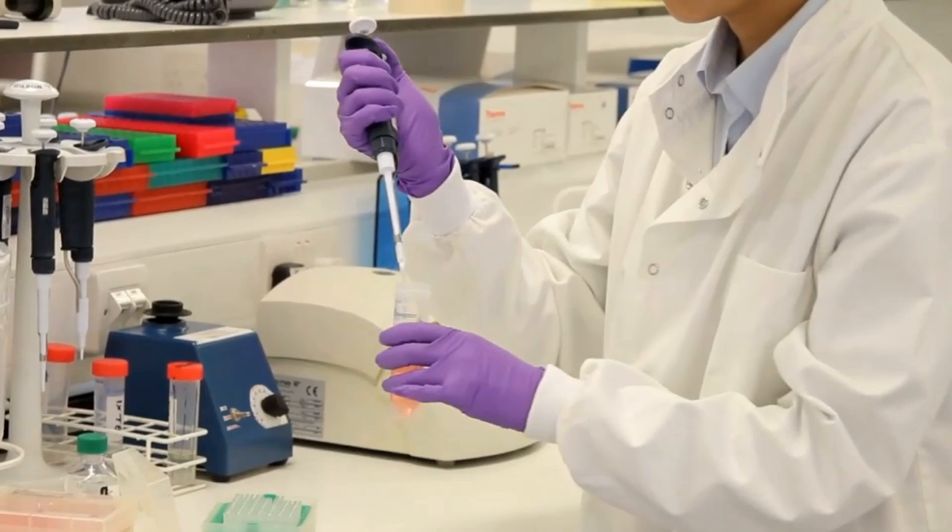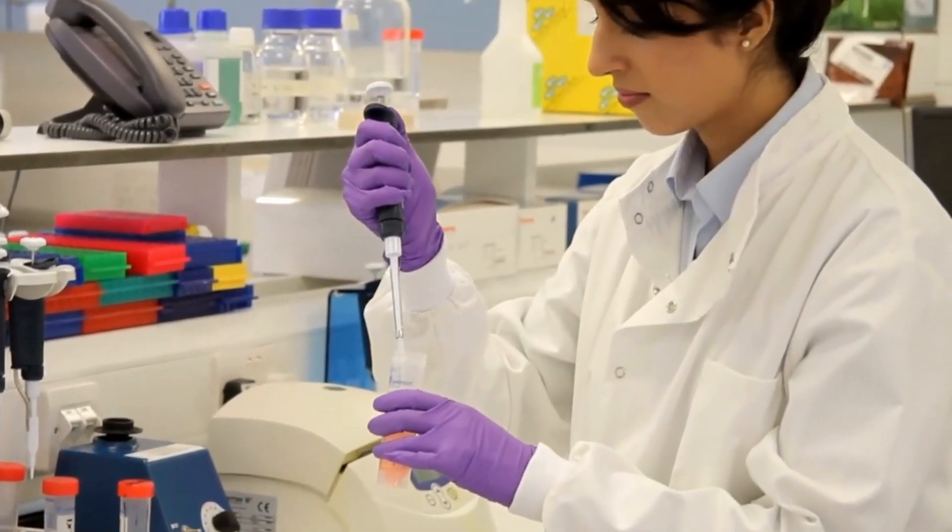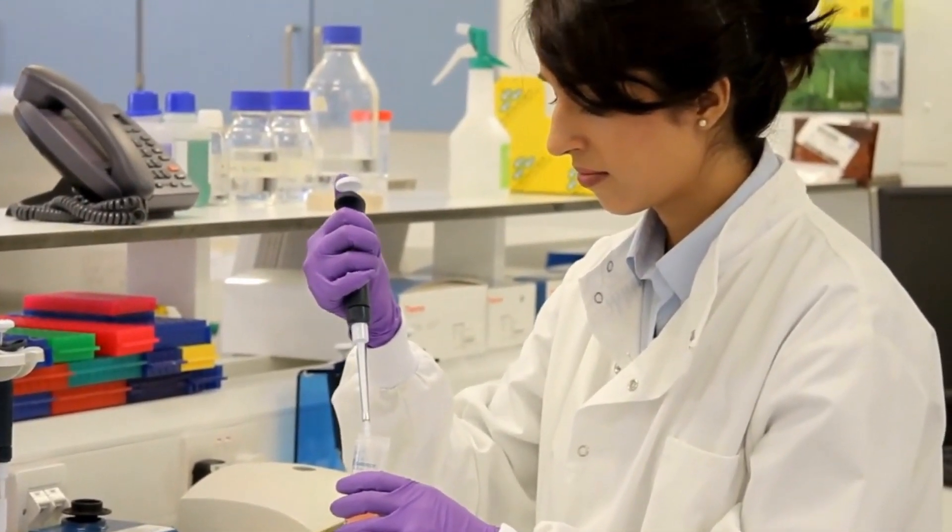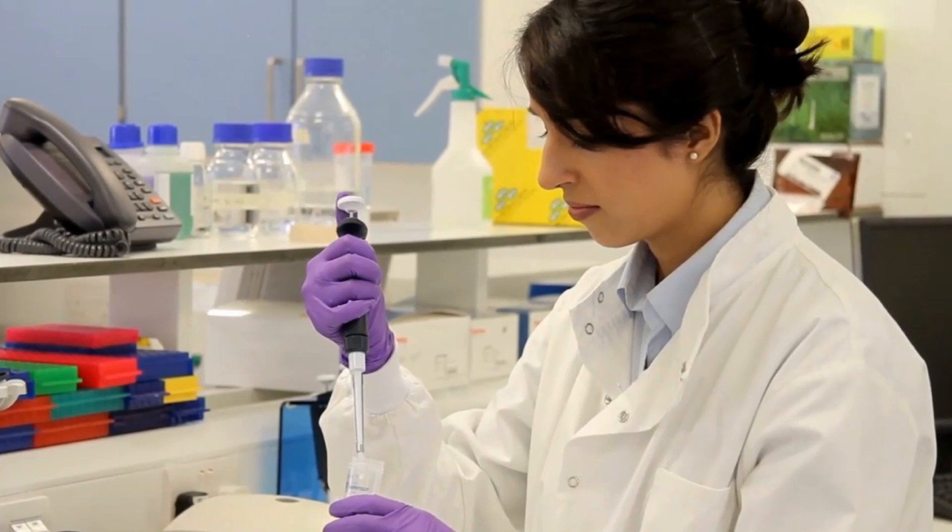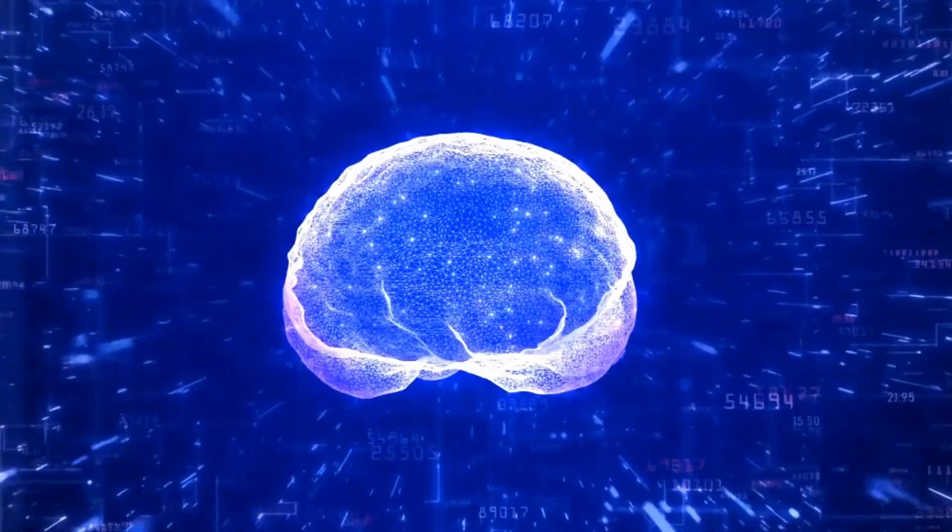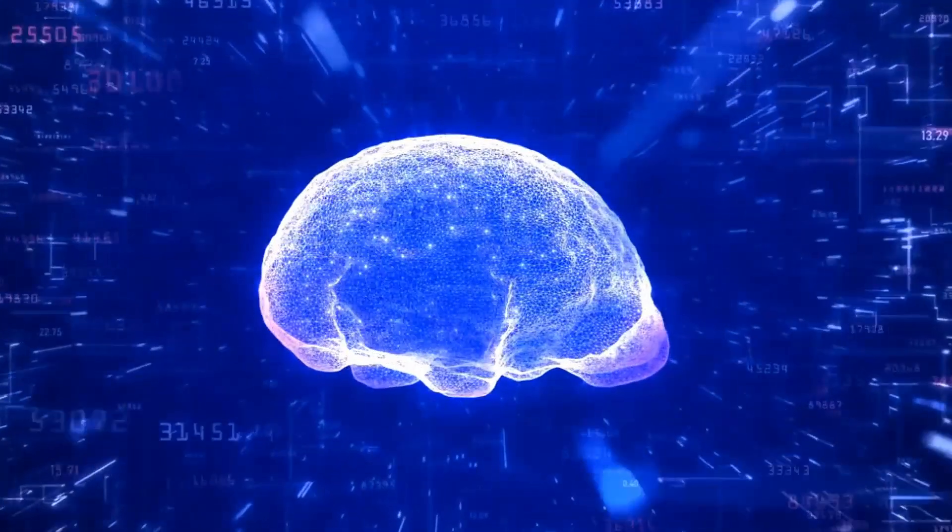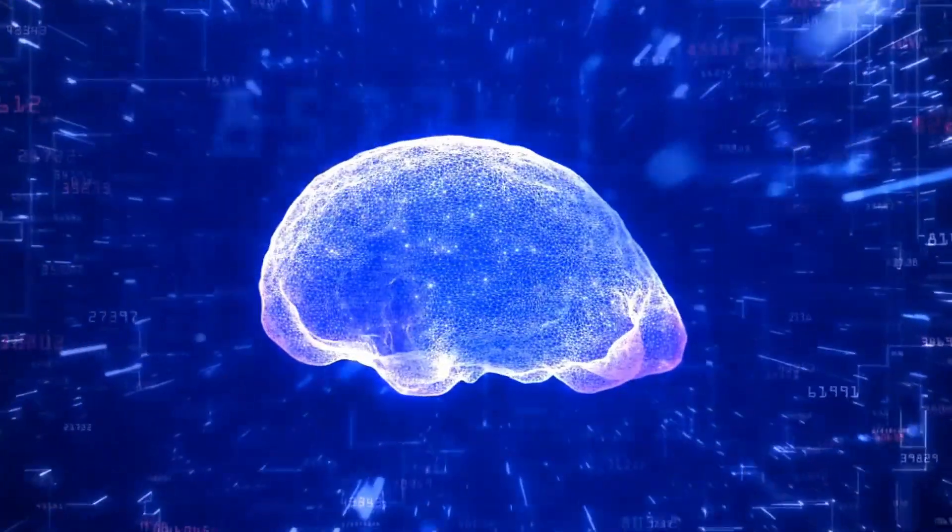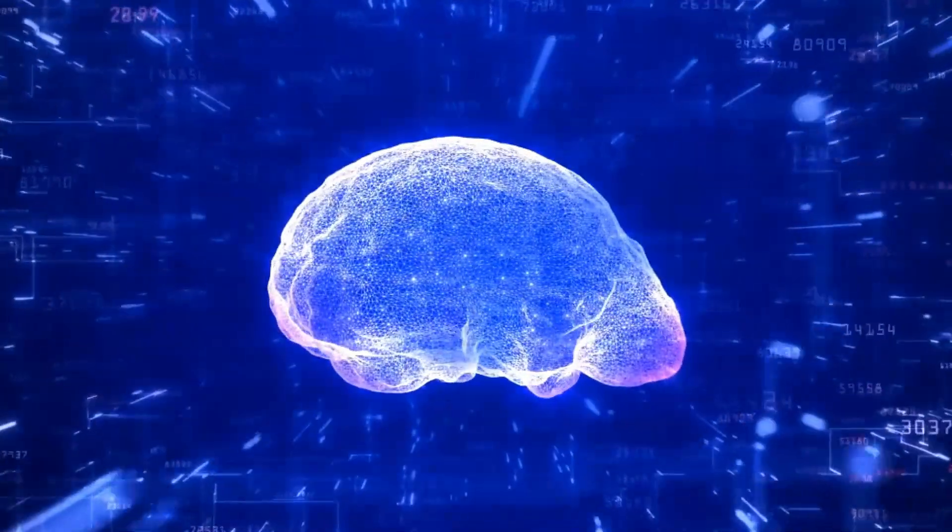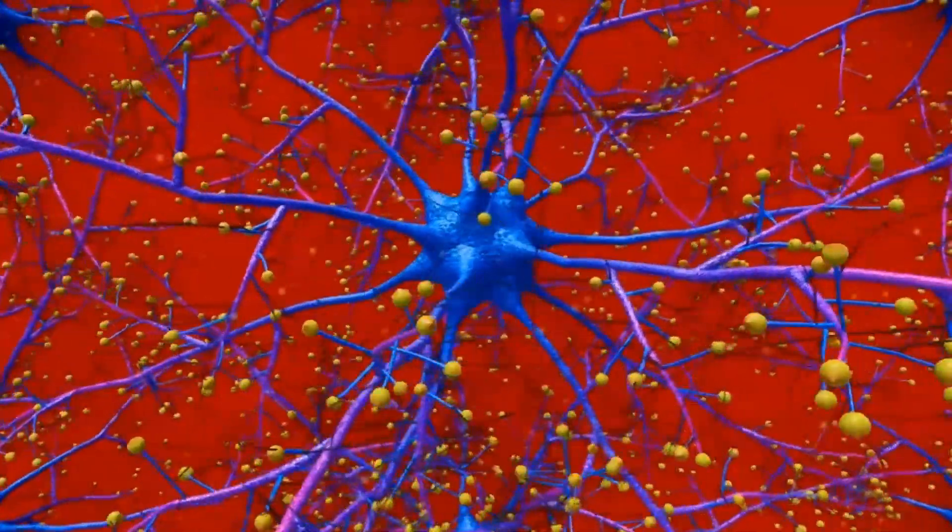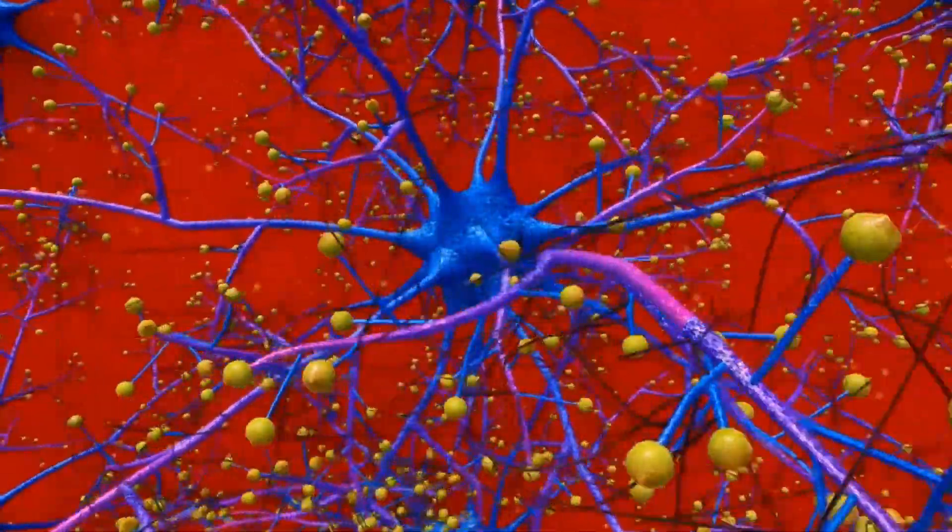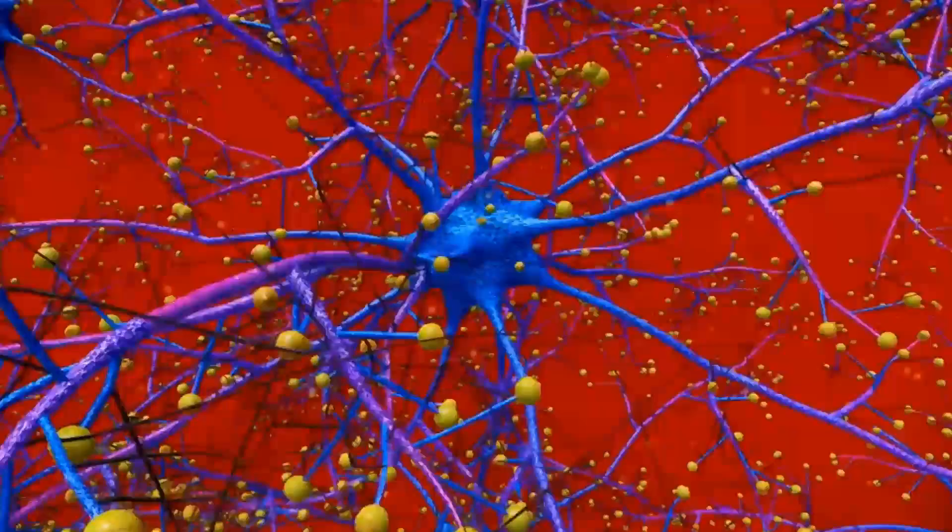Before AlphaFold 2, figuring out a protein's shape took a lot of time, money, and complicated equipment. But AlphaFold 2 changed the game by using deep learning, a type of AI that mimics how the human brain works. This technology can predict the structure of proteins much faster and with greater accuracy than ever before, revealing the shapes of nearly all known proteins in living organisms.